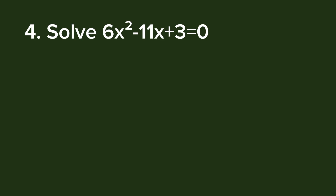The last example is the most interesting: solve 6x² - 11x + 3 = 0 by factoring. Here a = 6, which is not a perfect square, and 3 is also not a perfect square. Here's how to solve this quadratic equation by factoring.